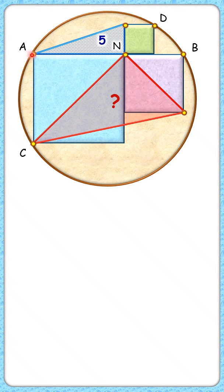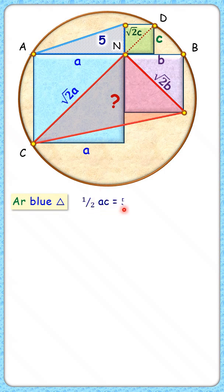Let's start by assuming the side length of square as a, b and c cm, and thus the diagonal length will be root 2a, root 2b and root 2c cm. The area of this blue triangle will be half of base times height, or half of ac. It's given as 5, and thus a times c is nothing but 10.